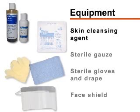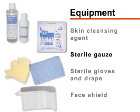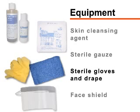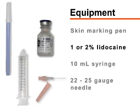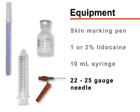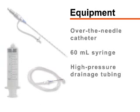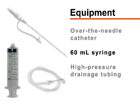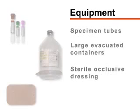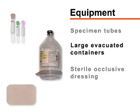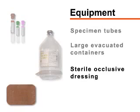For sterile preparation and administration of anesthesia, you will need a skin cleansing agent, sterile gauze, sterile gloves and drape, and a face shield. You will also need a skin marking pen, one or two percent lidocaine, a 10 milliliter syringe, and a 22 or 25 gauge needle. For collection of ascitic fluid, you will need an over-the-needle catheter device, a 60 milliliter syringe, high pressure drainage tubing, specimen tubes, large evacuated containers, and a sterile occlusive dressing.